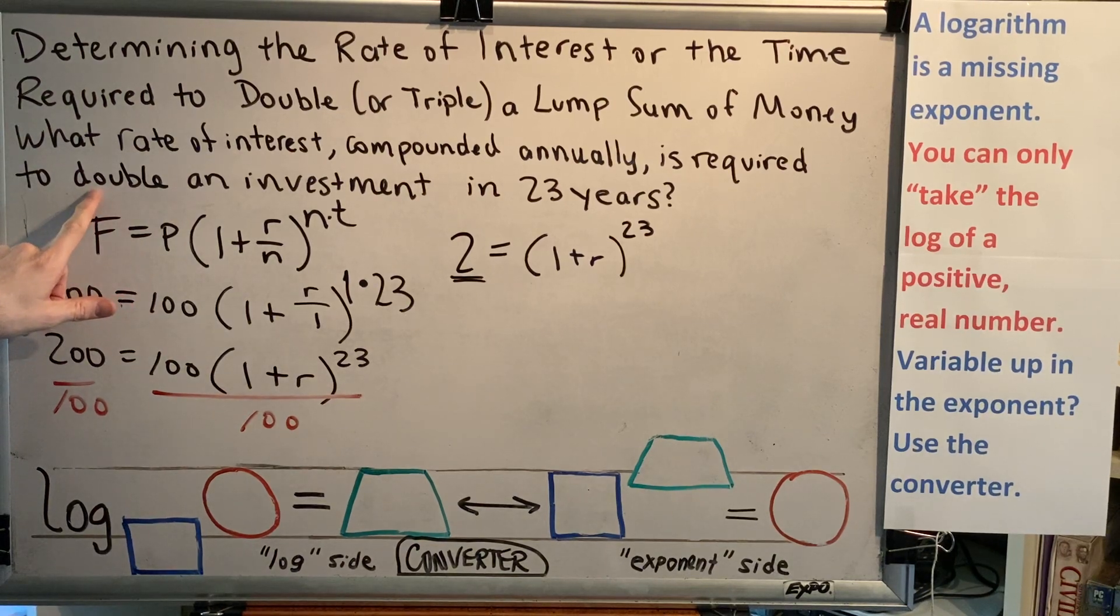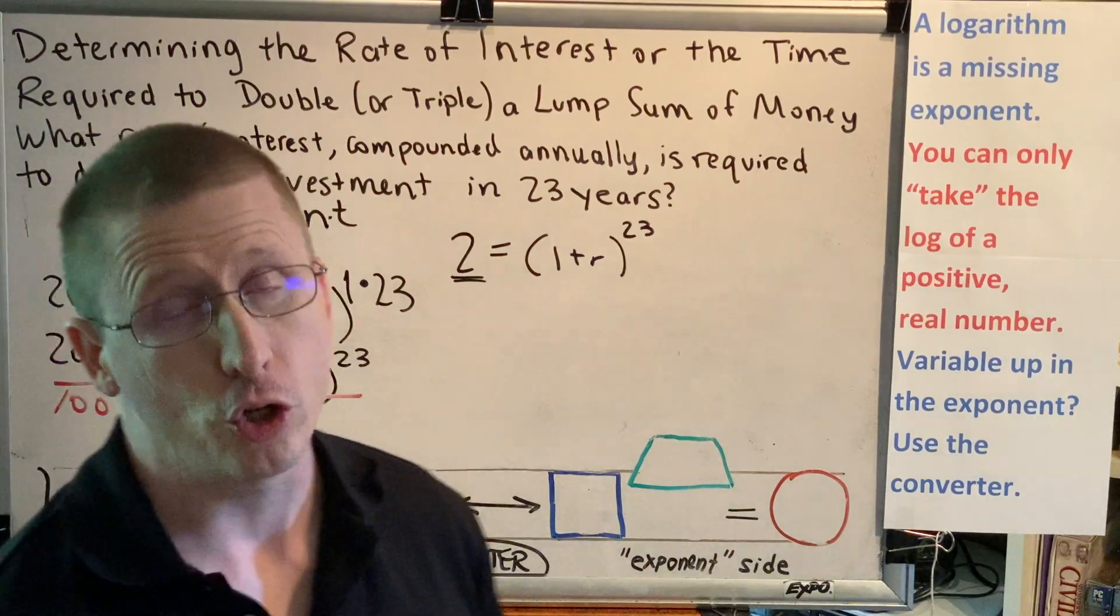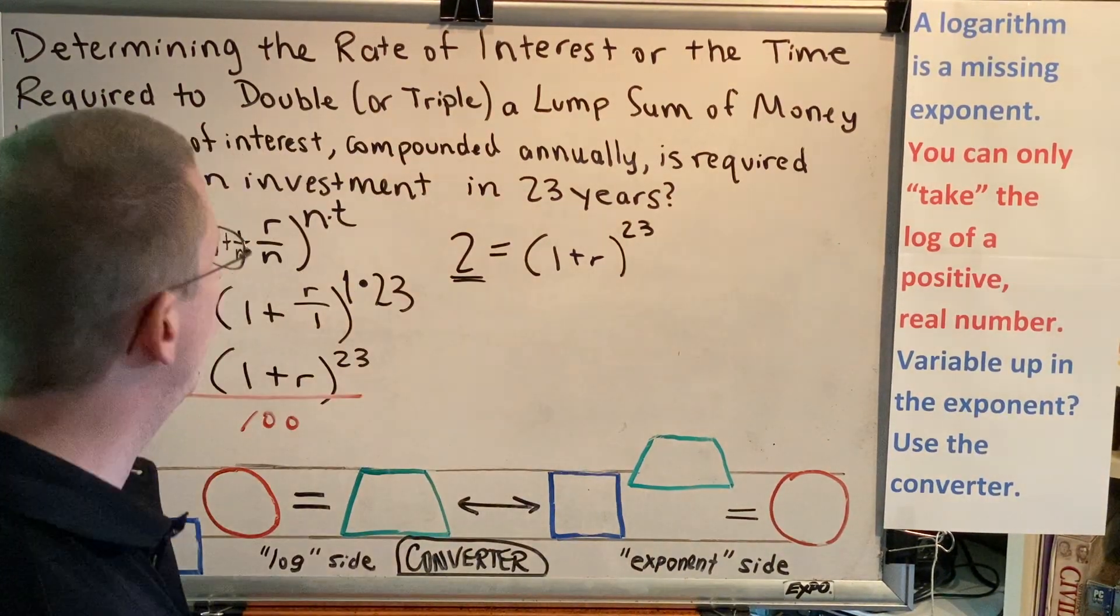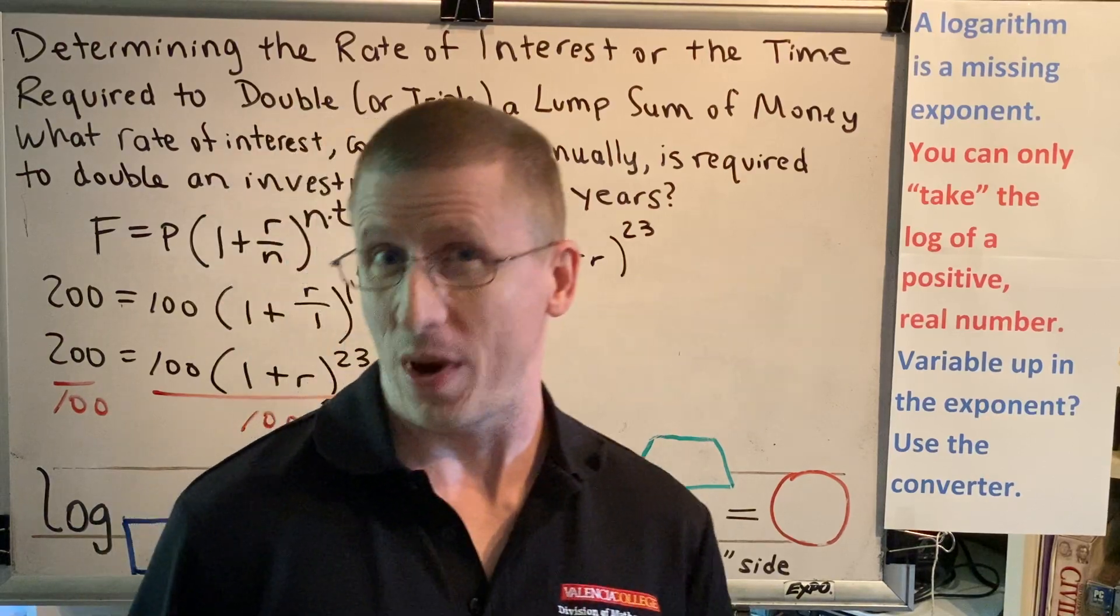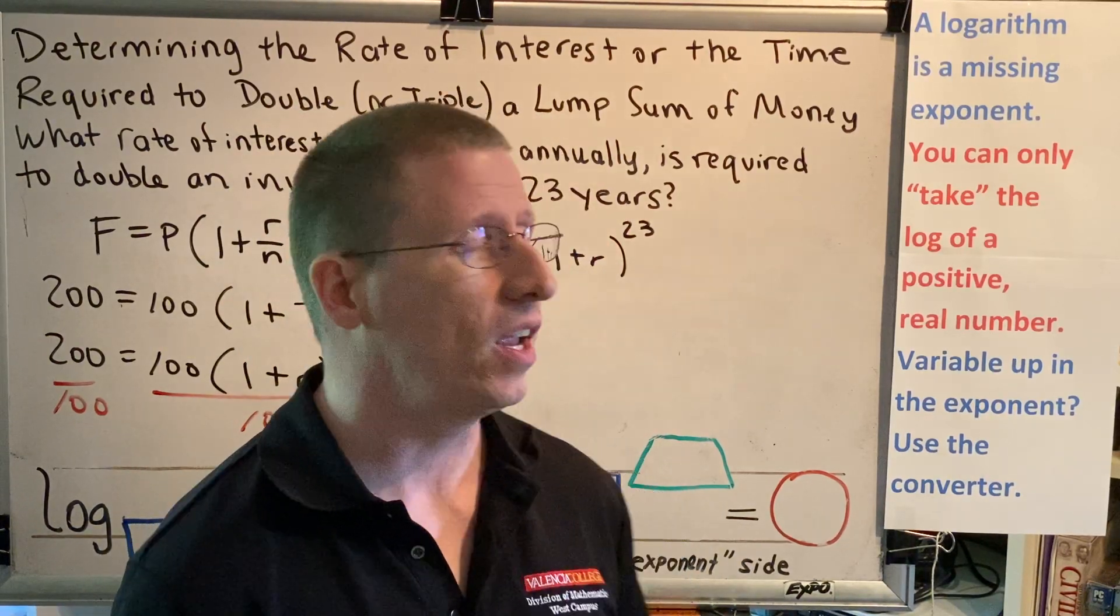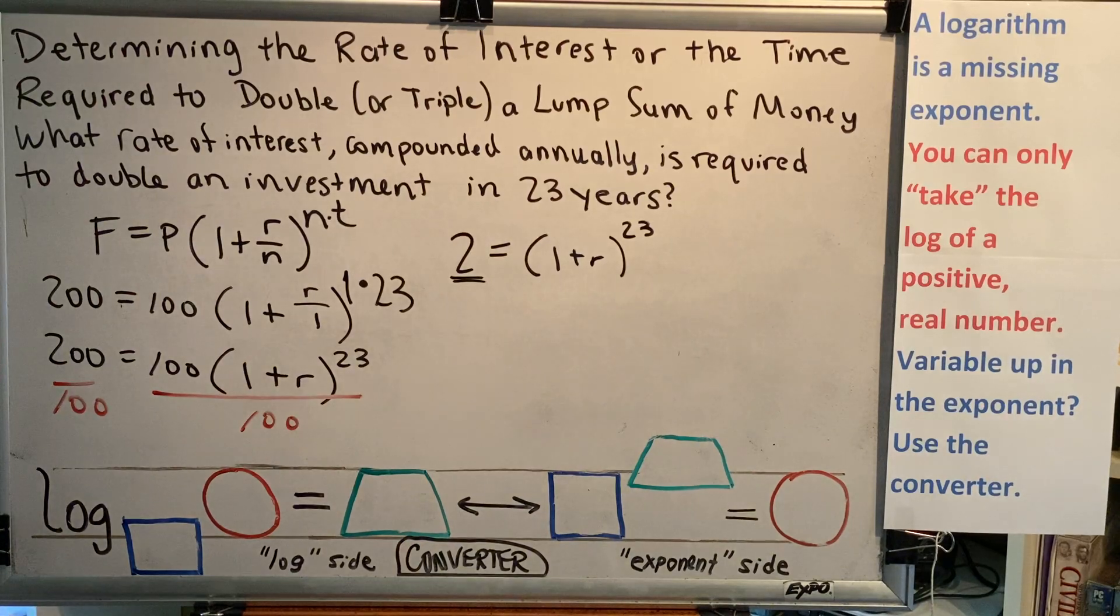Notice the value of 2 here. This is because we were asked to double. Double means multiplied by 2. If this problem had said triple instead, then we would have picked a number for P like 100, F would have been 300 because it's multiplying by 3, and we would have a 3 sitting right here.